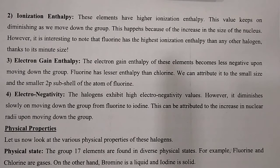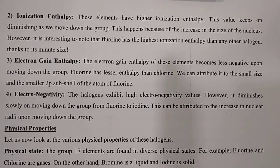Next is electronegativity. Fluorine is the highest electronegative species in the full periodic table. The halogens exhibit the highest electronegativity values; however, it diminishes slowly on moving down the group from fluorine to iodine. This can be attributed to the increase in nuclear radii upon moving down the group — effective nuclear charge decreases, size increases, and electronegativity decreases.